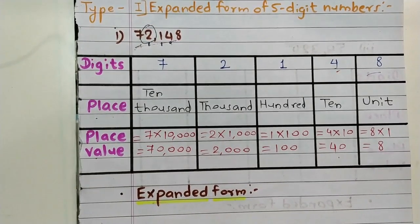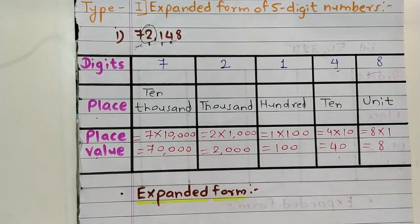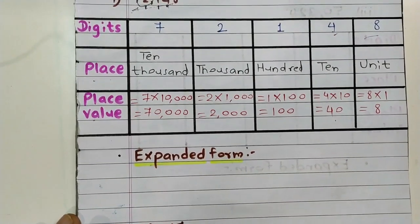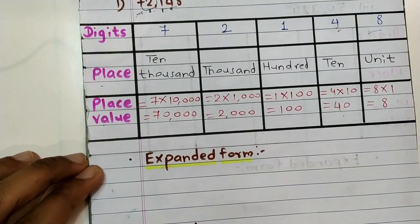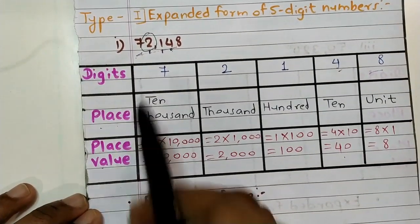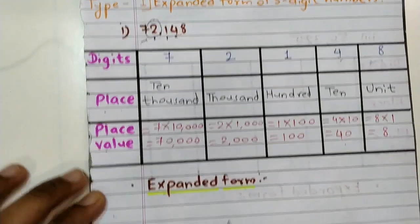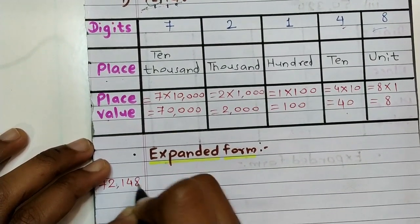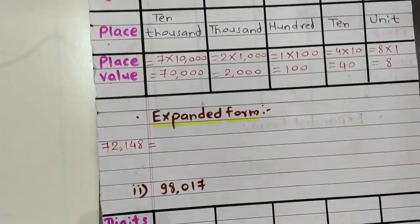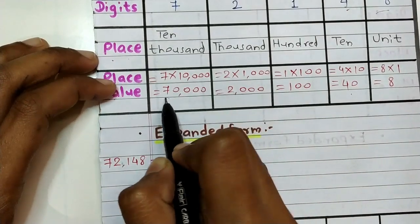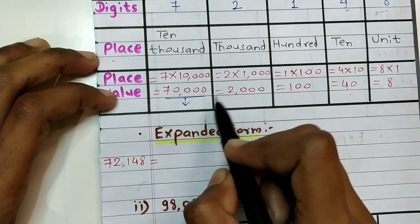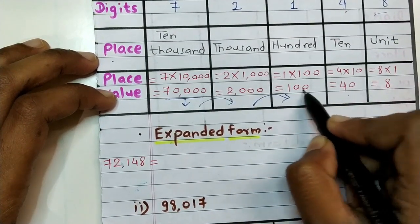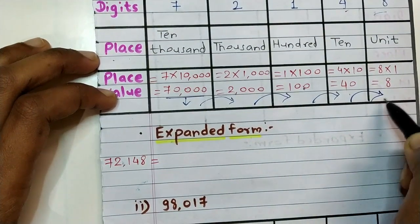Addition of place values means expanded form. So the expanded form of 72148: seventy-two thousand one hundred and forty-eight equals seventy thousand plus two thousand plus one hundred plus forty plus eight. This is the expanded form of the given number.